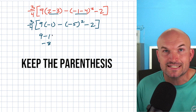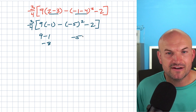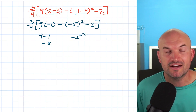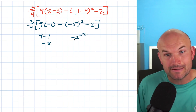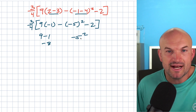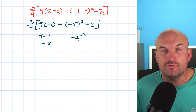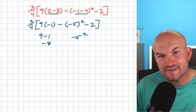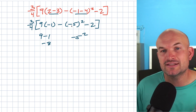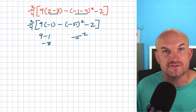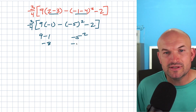Keeping those parentheses is extremely important. The same thing here — if I have a negative five quantity squared, if I don't put parentheses around that, that's a negative one times five squared. So five squared is 25, and then times negative one would be negative 25. But when you have parentheses squared, everything inside those parentheses is being multiplied by themselves.